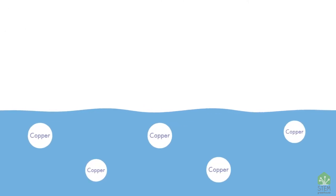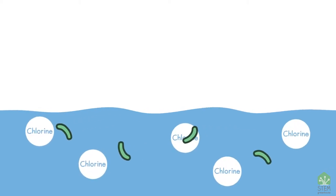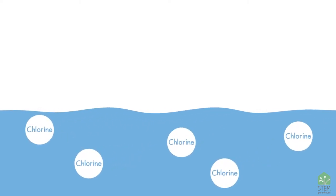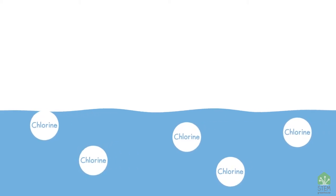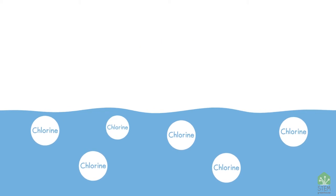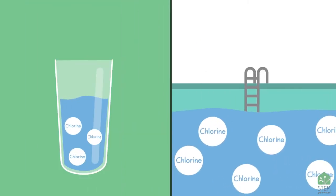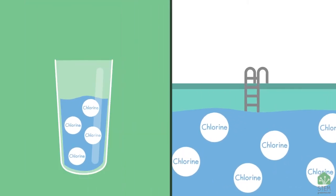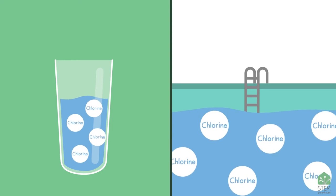Copper is found in small amounts naturally in water, but it can also dissolve in your water from copper pipes — the water has to be acidic to dissolve copper. Chlorine is added at water treatment plants to kill bacteria and germs in our water before we drink it. Too much chlorine smells and tastes bad. Chlorine is often added in swimming pools at higher levels than our drinking water, and too much might irritate your skin and eyes. It can even kill plants and fish.